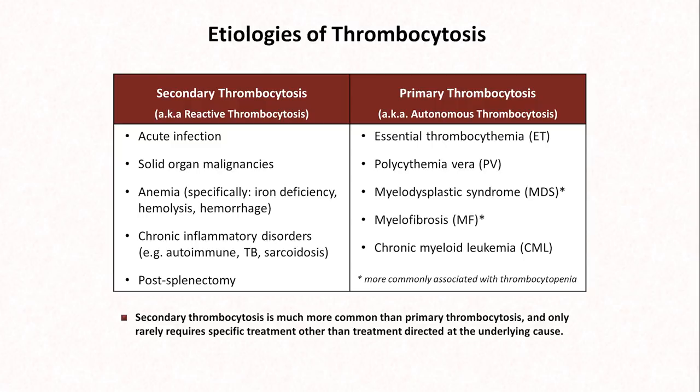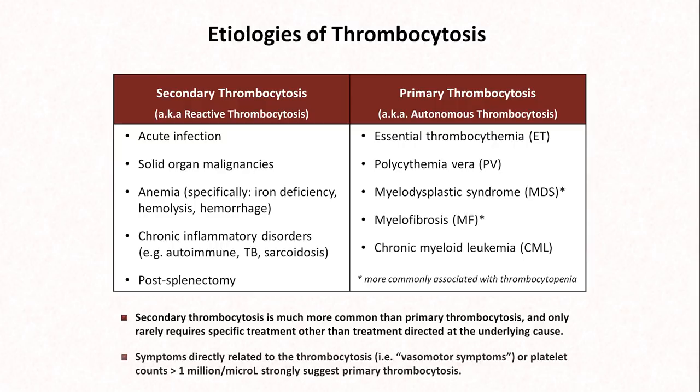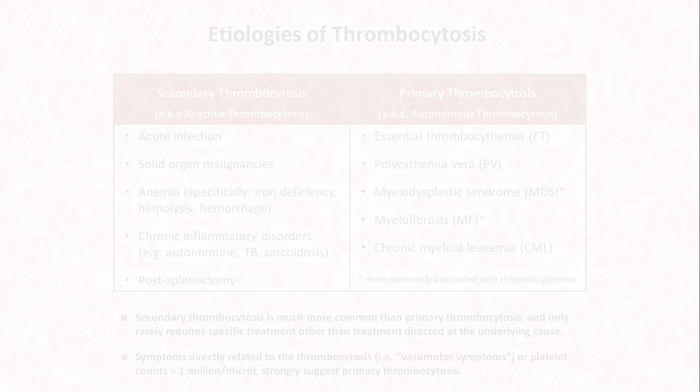When differentiating between primary versus secondary thrombocytosis, the presence of either symptoms directly related to the thrombocytosis — such as vasomotor symptoms — or a platelet count above one million strongly suggests primary thrombocytosis. The rest of this video will focus on the two most notable causes of primary thrombocytosis. First is essential thrombocythemia, or ET.